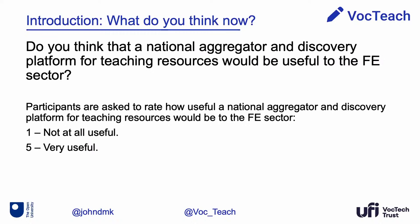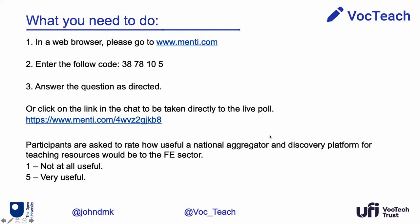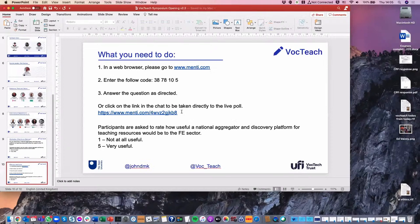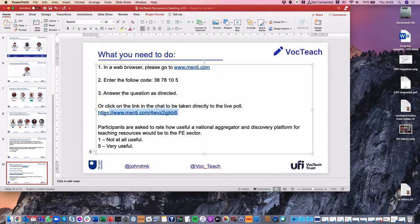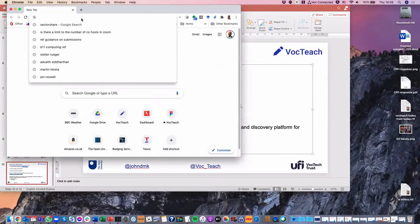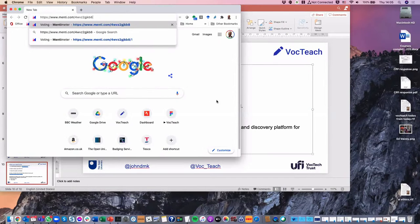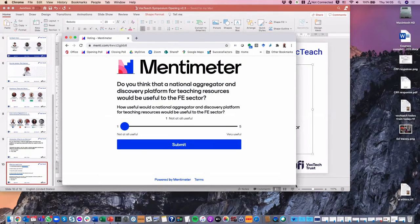When you go online, you'll see that you can answer from one — not at all useful — to five — very useful. Here are the details of what you need to do. You can go to your web browser with the generic URL menti.com and type in the code number, or you can click on the link which will be in the chat right now. So I can select the link, copy it, then go to my web browser and put the link in there.